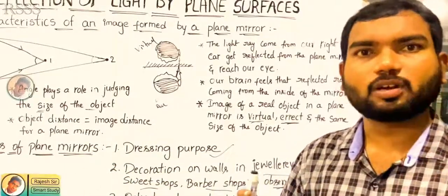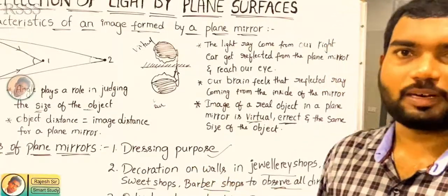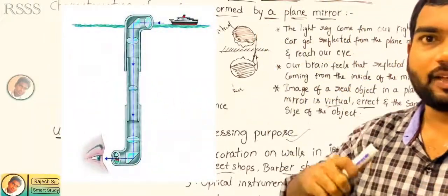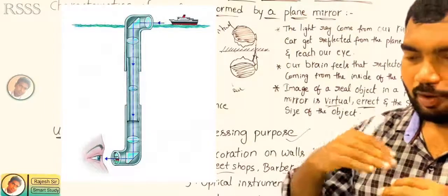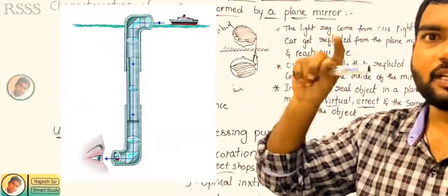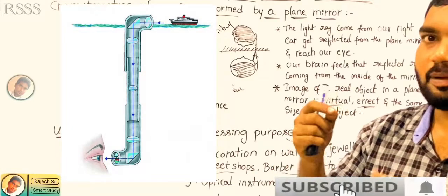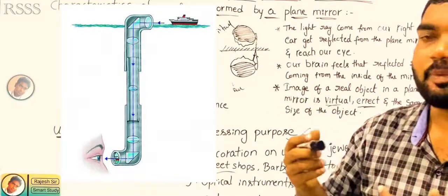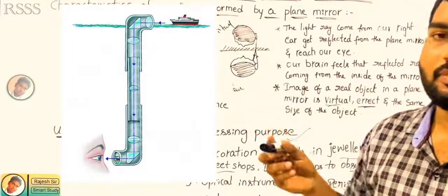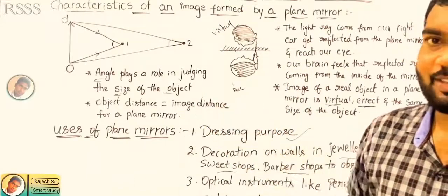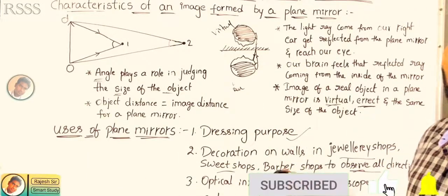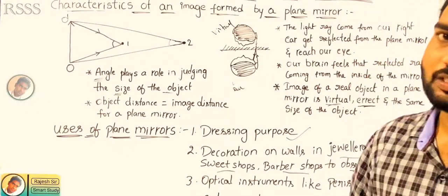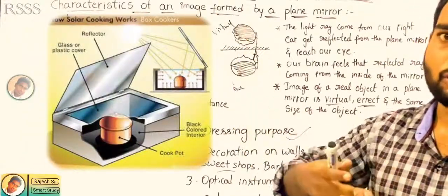It is a little bit convex. Like that, you can use a plane mirror. Optical instruments like the periscope — you can understand the periscope. If we have a wide view, we can use the periscope. We can check the periscope in the Ghazi movie. We can also use a periscope — optical instruments like a periscope use plane mirrors.